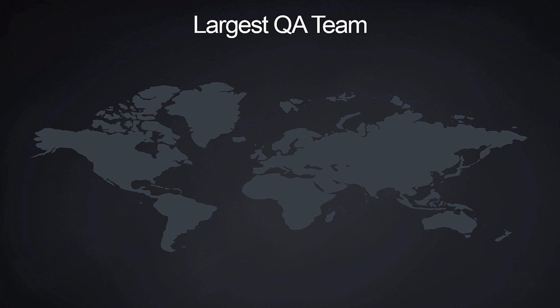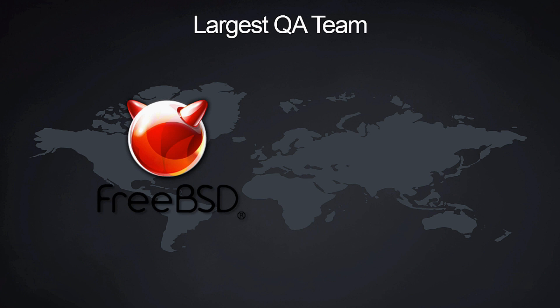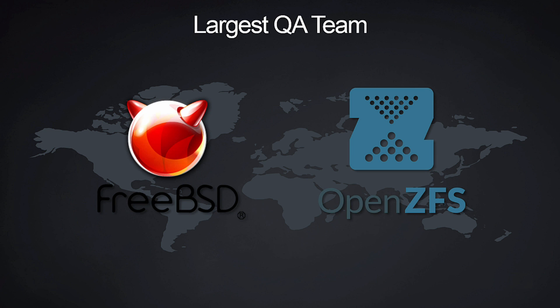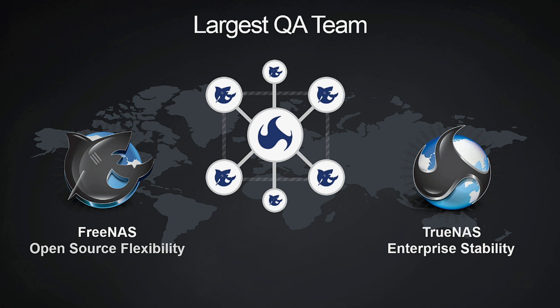TrueNAS and FreeNAS have the world's largest software quality assurance teams of any storage product on the planet. Both FreeNAS and TrueNAS are based on FreeBSD, an open-source operating system renowned for its stability. They're also based on the world-class ZFS file system, which has no equal in keeping data safe and free from corruption. Hundreds of thousands of users contribute to this software, and the developers of FreeNAS get a tremendous amount of input, feedback, testing, and contribution from the community at large. This allows for quicker development and testing of software releases.